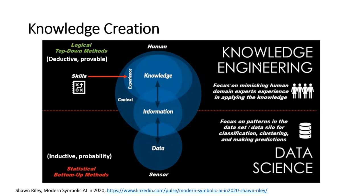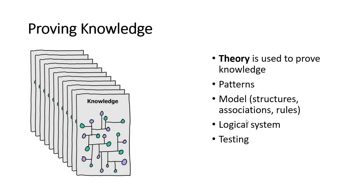Data science is useful, but it's not remotely as useful as knowledge engineering and humans creating the links between pieces of data or information. A theory is used to prove knowledge — you can use patterns, models, logical systems, and a lot of testing. You can prove that the knowledge you have in machine-readable form is correct.